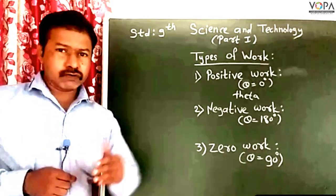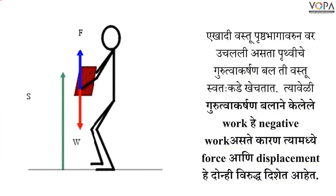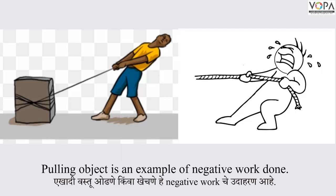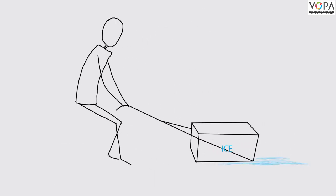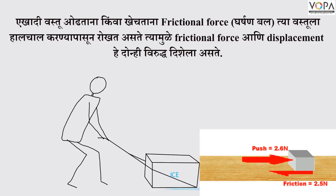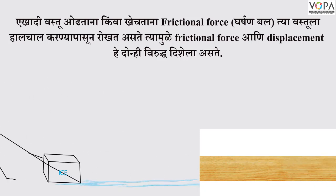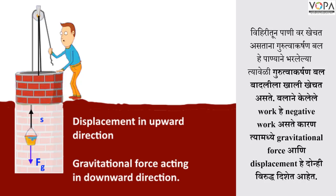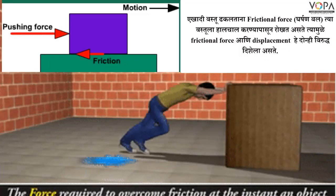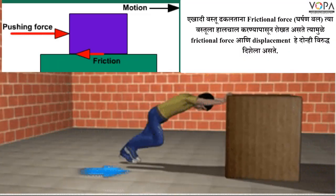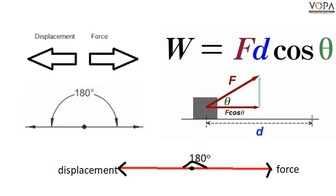Now let us move to the second type of work: negative work. When the force and displacement are in opposite directions, the work done is said to be negative work. For example, pulling any object is a kind of negative work. In this case, the displacement direction and the force direction are opposite to each other.